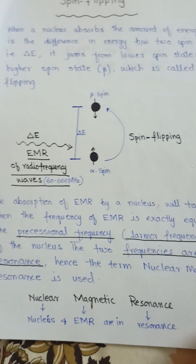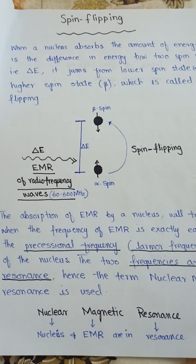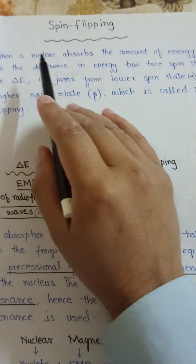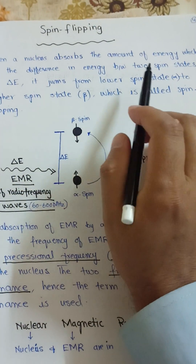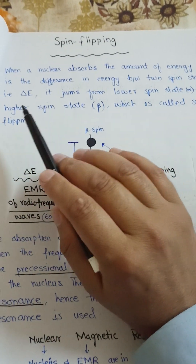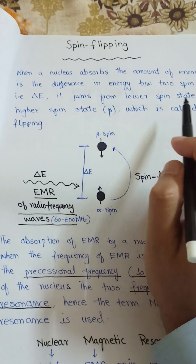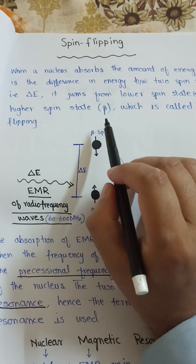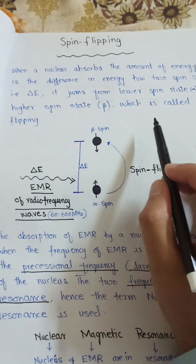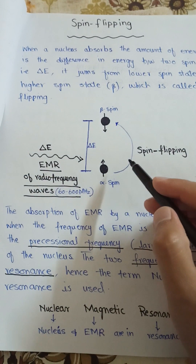Today we are going to discuss what is spin flipping and how it occurs. When a nucleus absorbs an amount of energy equal to the difference in energy between two spin states — that is delta E — it jumps from the lower spin state to the higher spin state, that is from alpha to beta spin state. This process is called spin flipping.